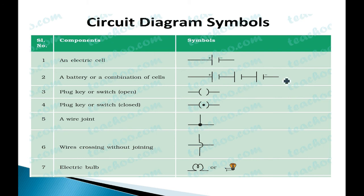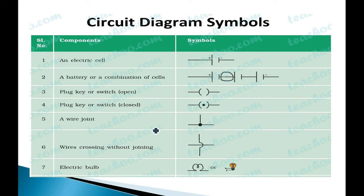When you connect three cells together you get a battery symbol. Next is connecting wires — shown as a line. Next is a plug key or switch: open means current does not flow, closed means key is inserted and current flows. Then we have joining of wires — wire joint and crossing without junction. Finally, an electric bulb is represented by its symbol. These are the symbols you need to remember for making an electric circuit diagram.